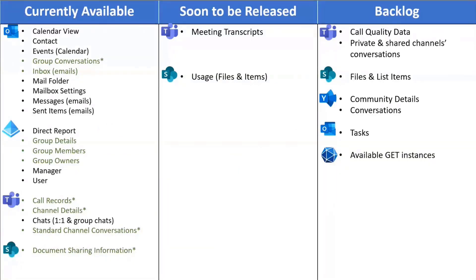Items in black in the 'currently available' column have been available for months, almost since the beginning of Microsoft Graph Data Connect. Items in green are recently released — new datasets made available in the past two to three months. Items with an asterisk are currently in private preview but will be released for general availability within the next few weeks.